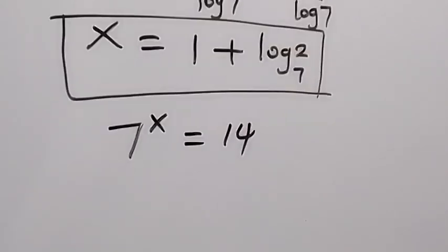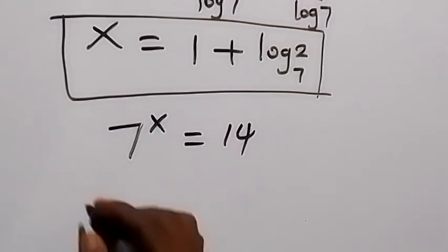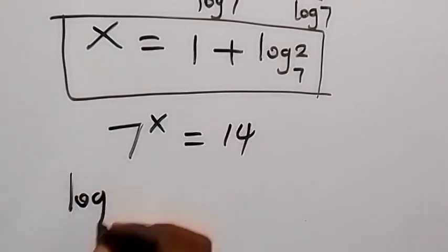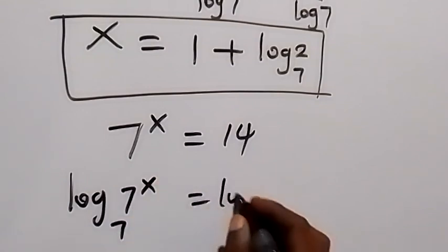So we have log base 7 of 7^x equals log base 7 of 14. Then also using the power law, x comes to the back.